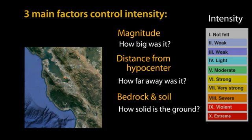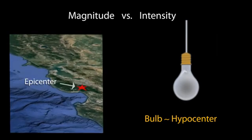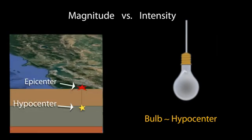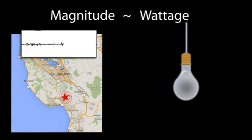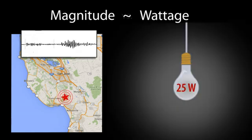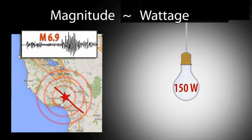Before we address each factor, let's clarify the difference between magnitude and intensity by comparing a lightbulb to an earthquake. The lightbulb represents the location within the earth called the hypocenter, where the earthquake begins. The magnitude, or size of an earthquake, is like the wattage of a lightbulb — just as wattage represents the amount of power, magnitude is related to the total amount of energy released by the earthquake's source.